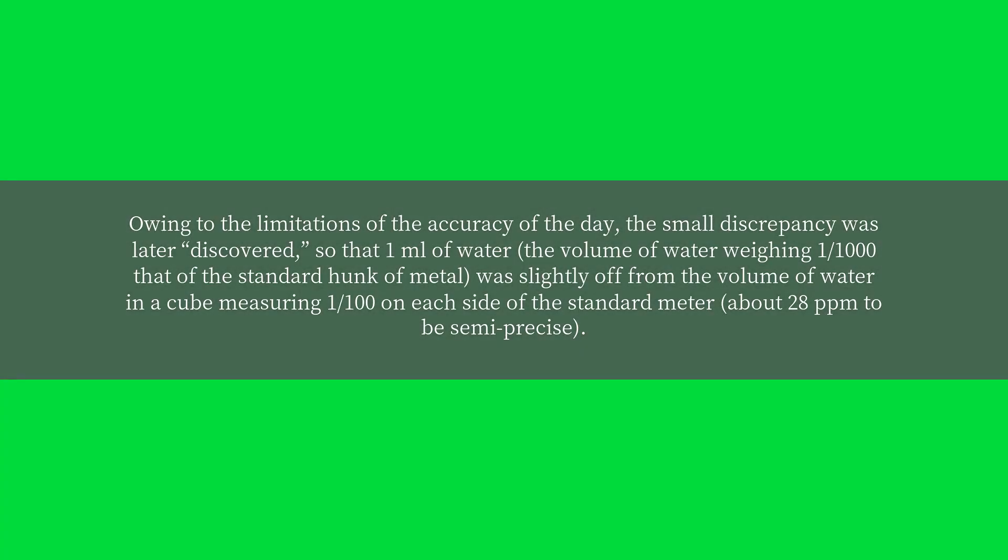Owing to the limitations of the accuracy of the day, the small discrepancy was later discovered, so that 1 ml of water, the volume of water weighing 1/1000 that of the standard hunk of metal, was slightly off from the volume of water in a cube measuring 1/100 on each side of the standard meter, about 28 ppm to be semi-precise.